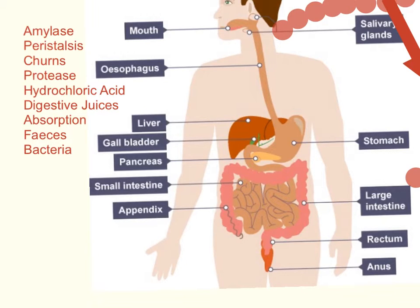In the small intestine, all the digestible food has now been broken down into small molecules and gets absorbed into the blood — that's the process of absorption, where food molecules move into the bloodstream. Then we have the large intestine, where what's left is the food we cannot digest, which is the fiber — the undigested food.